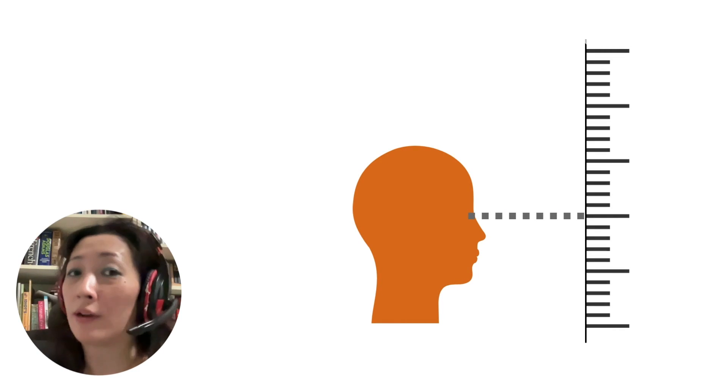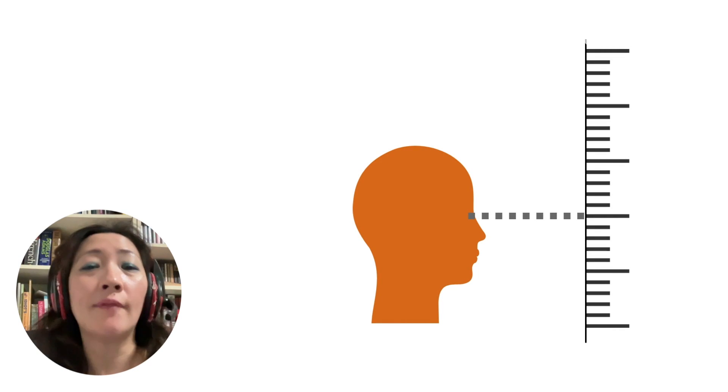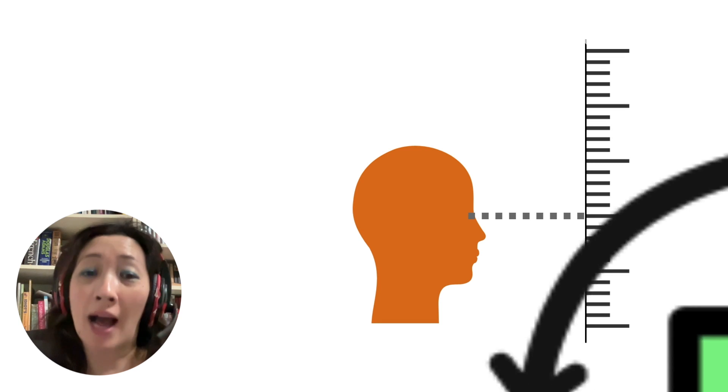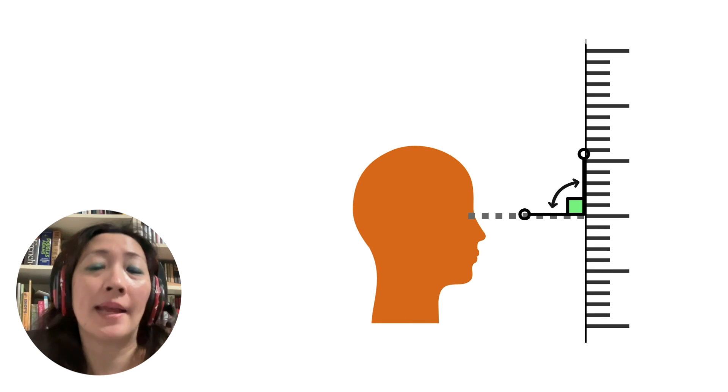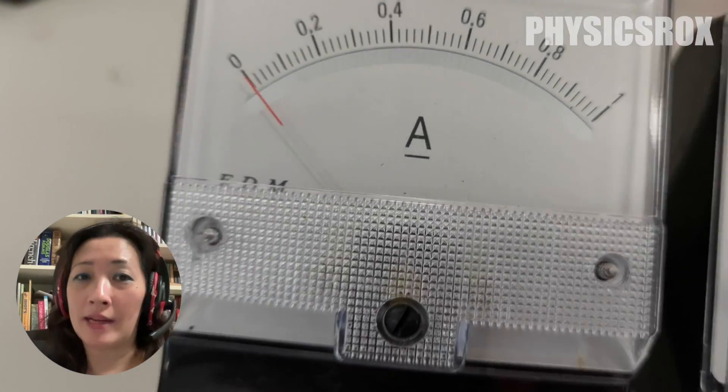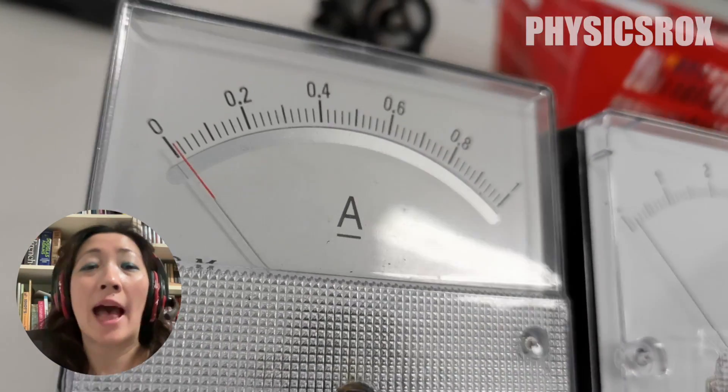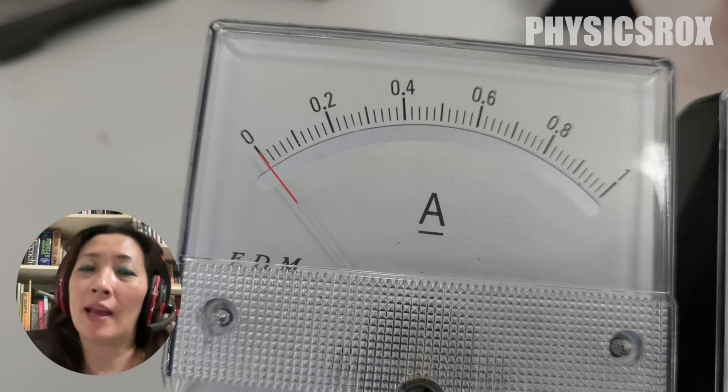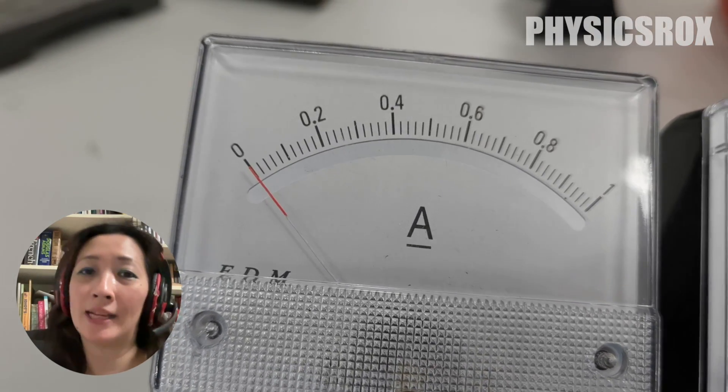Whenever we want to avoid parallax error, we have to ensure that our eye position is perpendicular to the scale that we are reading. The anti-parallax mirror is a simple tool to help us ensure that our eye is perpendicular to the scale.